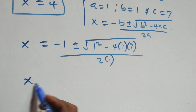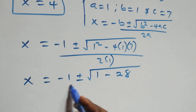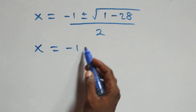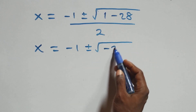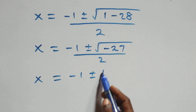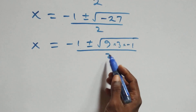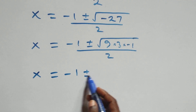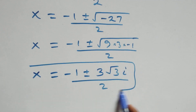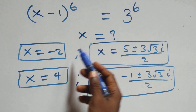This becomes x equals minus 1 plus or minus square root of 1 minus 28, which is minus 27, all over 2. We write this as square root of 9 times 3 times minus 1. Taking root 9 as 3 out gives x equals minus 1 plus or minus 3i root 3, all over 2. So we also have two complex solutions from Case 2.